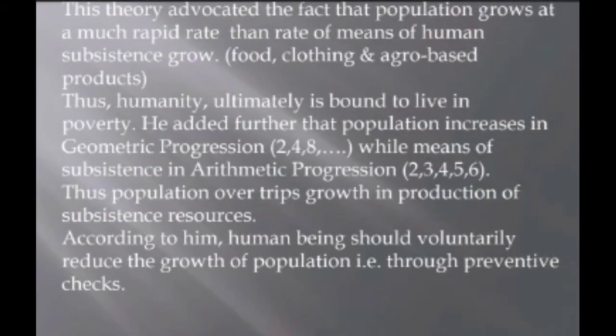The theory advocates that population grows at a rapid rate while the means of human subsistence grows much more slowly. There is an imbalance between the growth of human population and the means of subsistence, which means that humanity is bound to live in poverty according to Thomas Malthus.